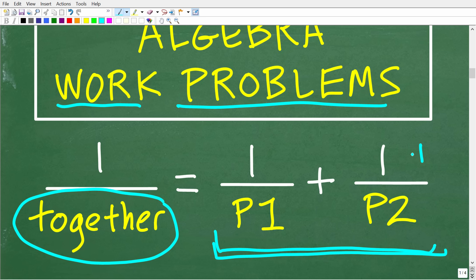Now, if we had a third person, it would be plus one over P3, etc. So, let's go ahead and put this formula to work to solve this problem.